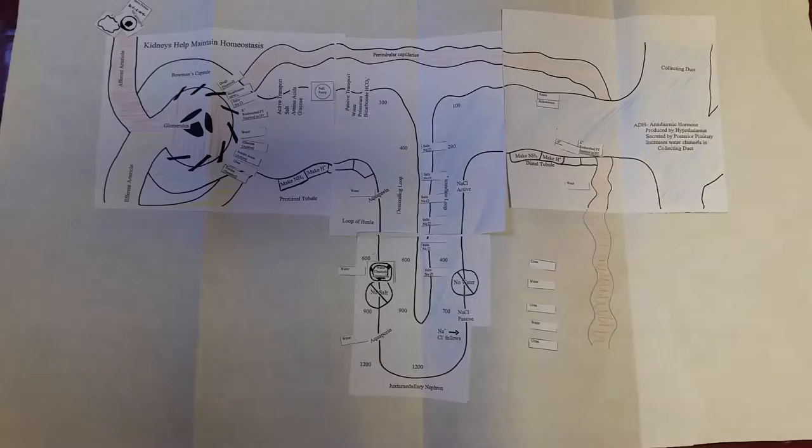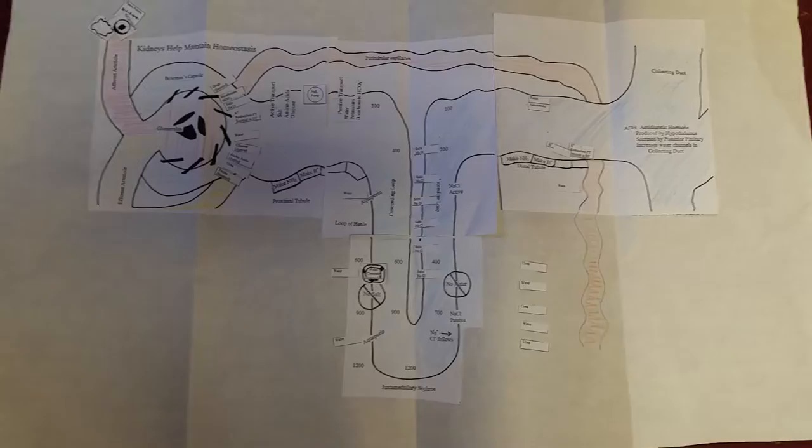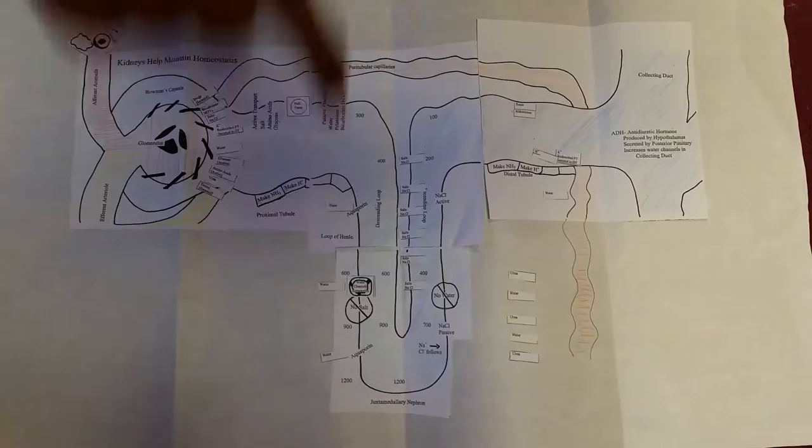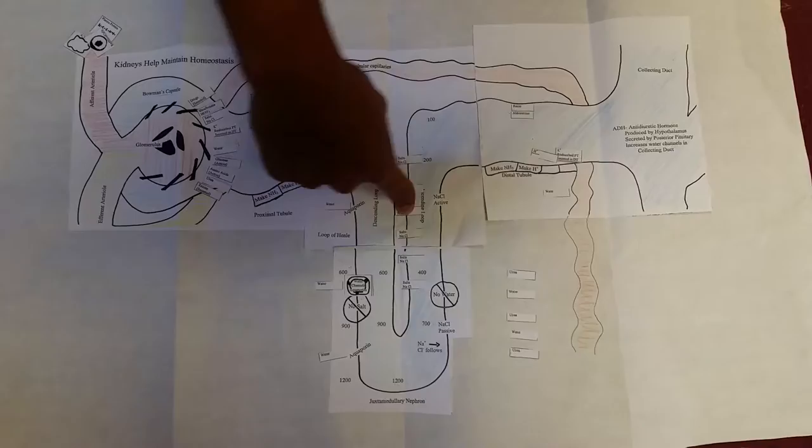After that, the filtrate goes through the descending loop where only water is reabsorbed. Then the filtrate goes around where only salts are reabsorbed. This is known as the loop of Henle, and that is also known as the ascending loop where only salt is allowed to be reabsorbed into the bloodstream.